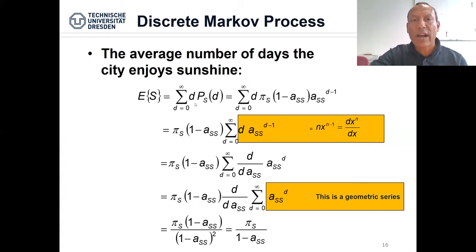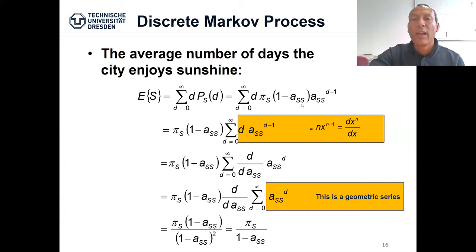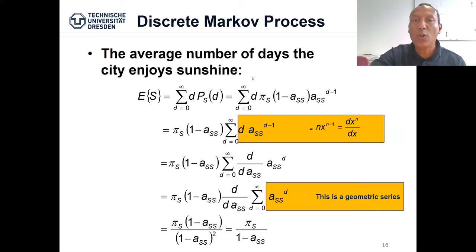For this, we have the initial probability π_s, then for D−1 transitions we have the transition probability A_ss repeating itself D−1 times, and then changing into one of the other states with probability 1−A_ss. We describe this in short form as P_s(D), which simply means the probability of experiencing sunny states for D number of days.